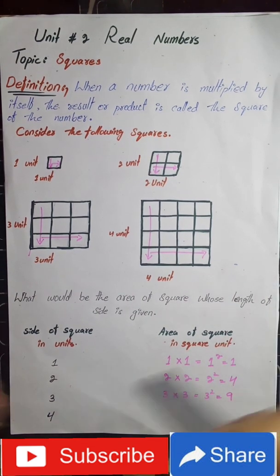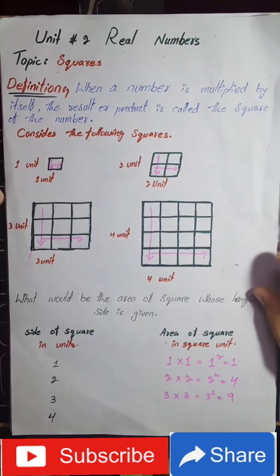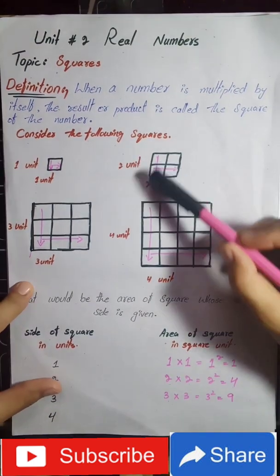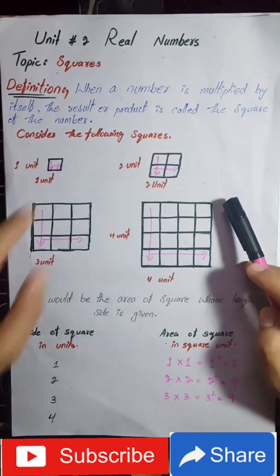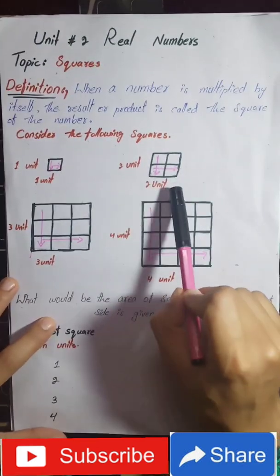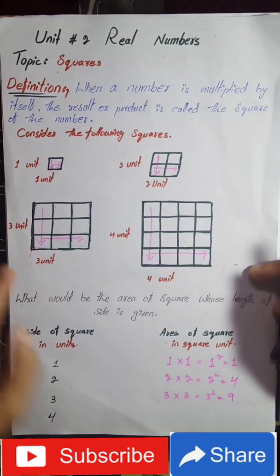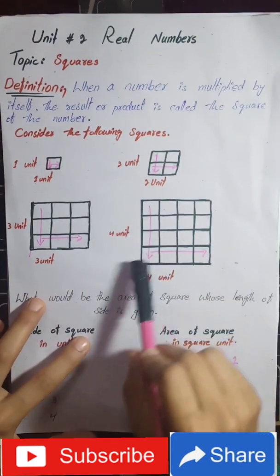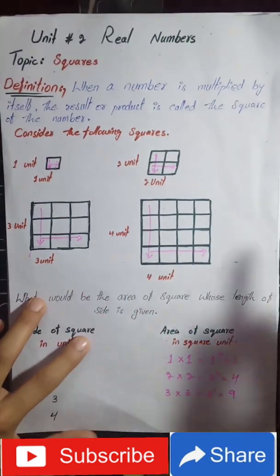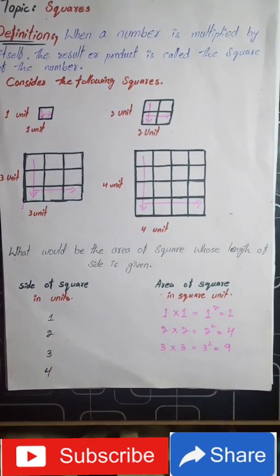Let's look at some examples with visual boxes. If we have one box, that means one unit. If we have two boxes, that means two units — two units from top to bottom and two units from left to right. Similarly, three boxes means three units in each direction, and four boxes means four units in each direction.